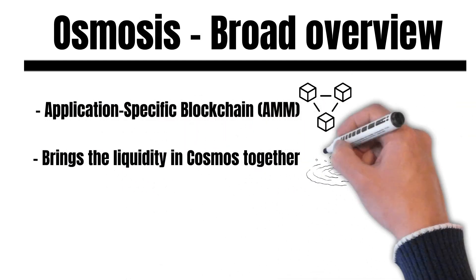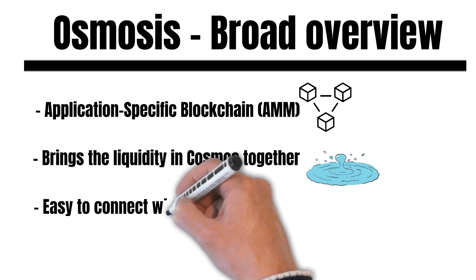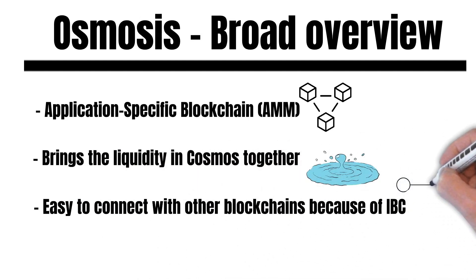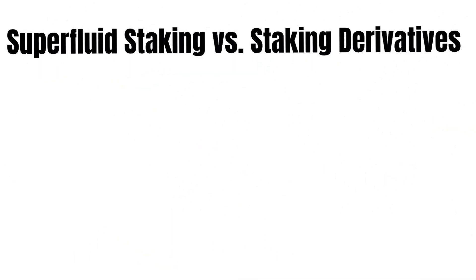Osmosis is an IBC-enabled blockchain that uses the Cosmos SDK. And because of this, Osmosis finds it very easy to connect with other Cosmos chains. Now let us continue with another crucial aspect of the Osmosis ecosystem.